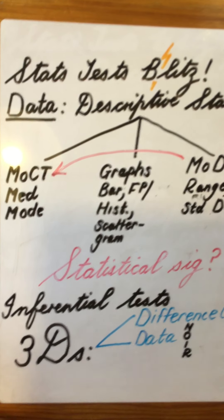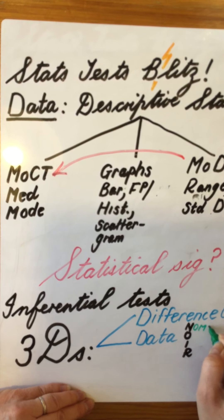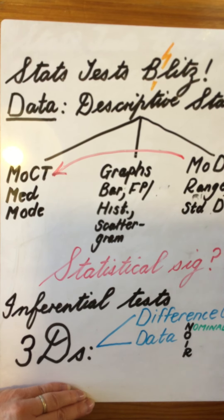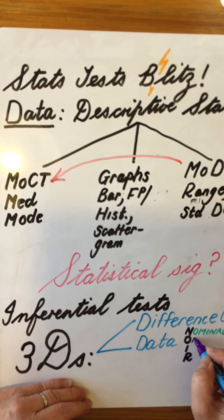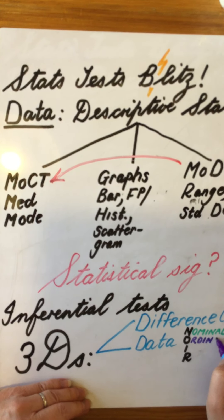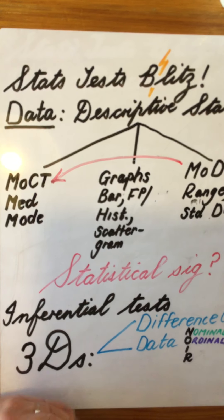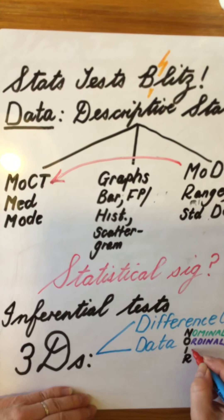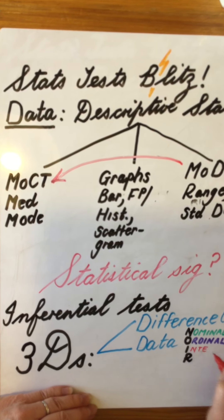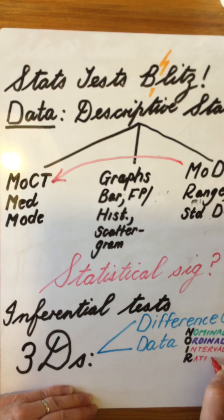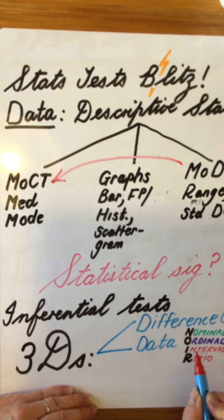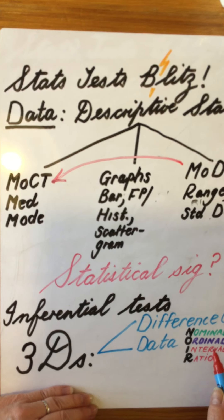N stands for nominal data, which is data that is in categories or in frequencies. Ordinal data is data that we can order, data that we can rank. Interval data is data that gives us public measurement — we have a safe scale. Nominal data refers to data in categories which we count up in frequencies. Ordinal data we can rank.